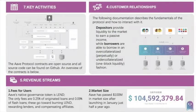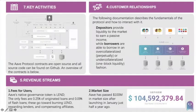Here are the detailed information about the business model: the key activities, customer relationships, and the revenue streams. The revenue stream contains two parts — fees for users. One of our features is that our loan fee is very low, as you can see. The market size is very big and increases very quickly.